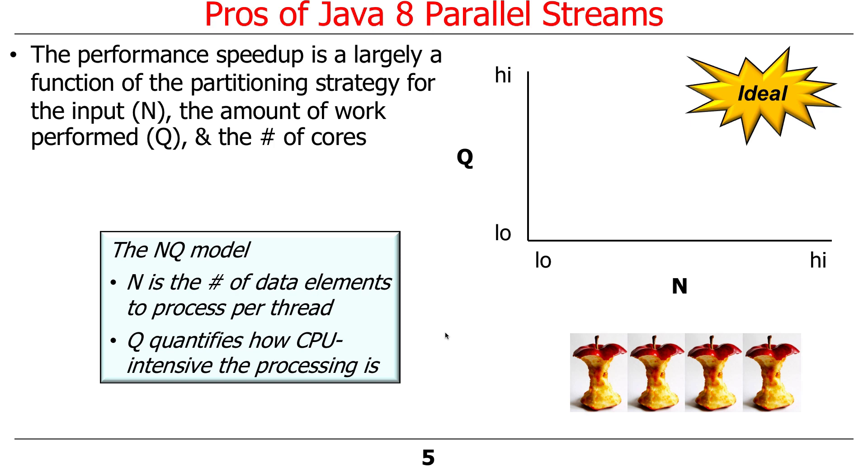Another factor that matters is the number of cores. If you don't have many cores, you're not going to get a big win. If you have a lot of cores, you're going to get a bigger win.